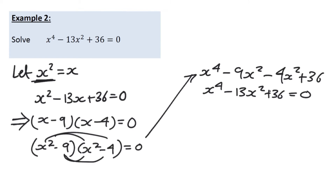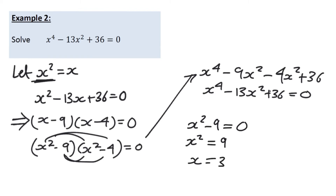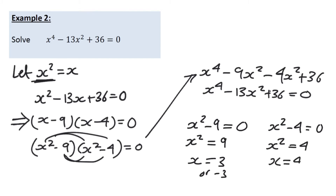From this point we solve like a normal quadratic equation. Let x squared minus 9 equal 0, so x squared equals 9, giving x equals 3 or minus 3. Then let x squared minus 4 equal 0, so x squared equals 4, giving x equals 2 or minus 2. And these are the four answers.